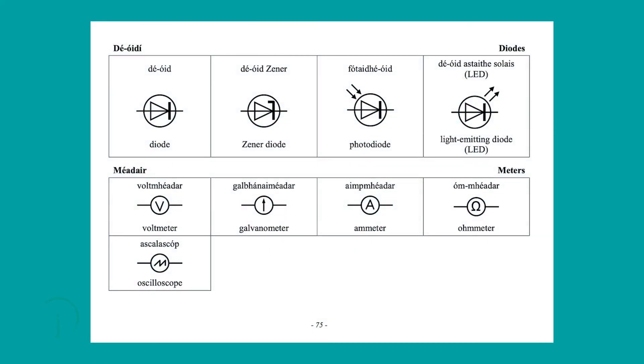Before diving into part j I'd like to draw your attention to pages 72 to 78 of the Formula and Tables book which are of great use when drawing circuit diagrams. Today we'll be looking at page 75 in particular and the circuit symbols for a diode, a voltmeter and an ammeter.